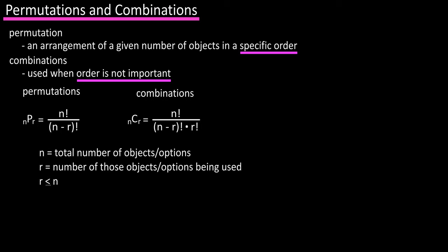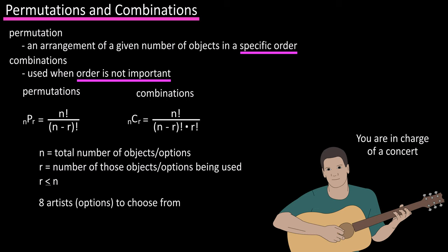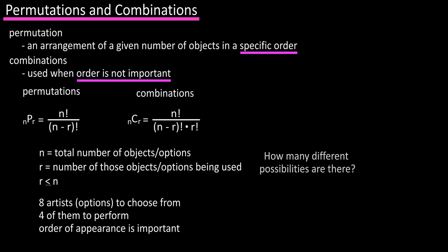As an example, let's say you're in charge of a concert. You have eight artists to choose from, you need to select four of them to perform, and the order of appearance is important. How many different possibilities are there?